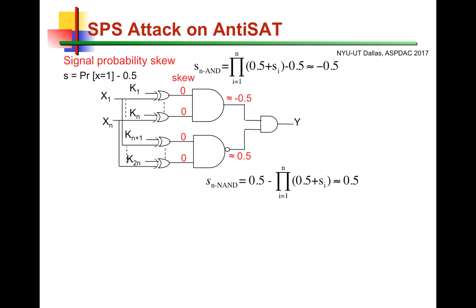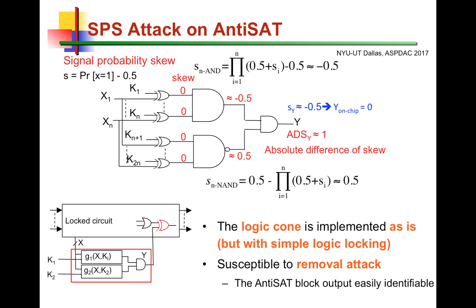These two oppositely skewed signals converge at a gate that produces the output Y, which injects the error into the original circuit. The structural analysis looks for a gate where two oppositely skewed signals are converging, and the output of that gate is most likely the output of the anti-SAT block. The problem in anti-SAT is that once the boundaries of the block are identified with this signal probability skew analysis, if you remove the anti-SAT block, you're left with the original circuit possibly locked by simple means such as fault-analysis-based or random logic locking.